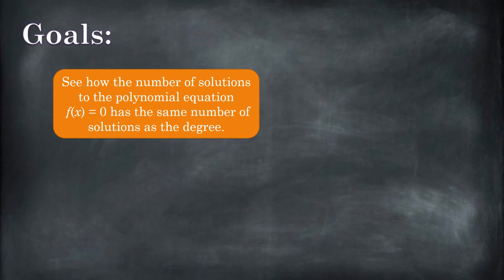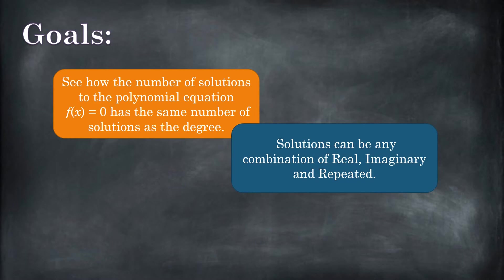Specifically, what we're going to see is that the number of solutions to a polynomial equation set equal to zero is going to be the same as the degree of that polynomial. So if you have a polynomial that's got a degree of five, there are going to be five solutions. Those five solutions can all be real, they can all be unique, they can be imaginary, or they can be repeated. That's what multiplicity is dealing with.